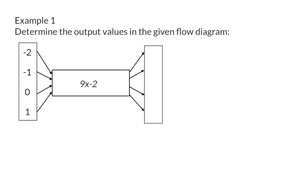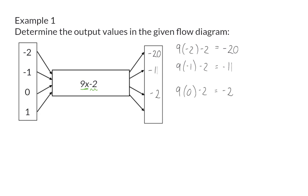Example one: determine the output values in the given flow diagram. Here we are given the function as nine times the input value minus two. We can determine the output values by substituting each input value. Starting by substituting x with minus two gives an output value of minus 20. Then we also substitute minus one, zero, and one. If you are familiar with number patterns, you would realize that this function is a linear number pattern — the nine indicates a constant difference of nine between consecutive output values, and you can see that we add nine every time to get the next output value.